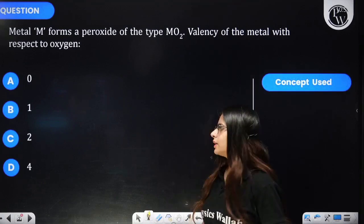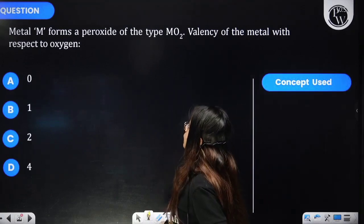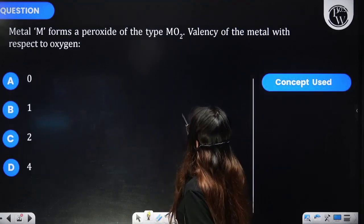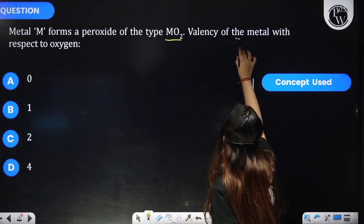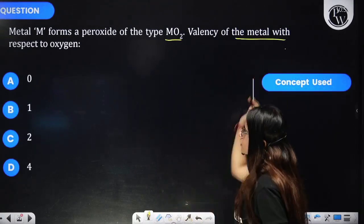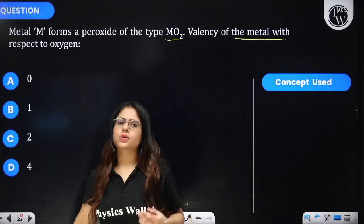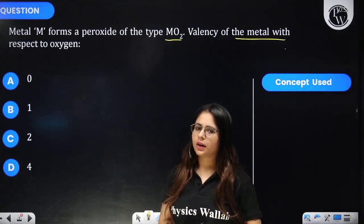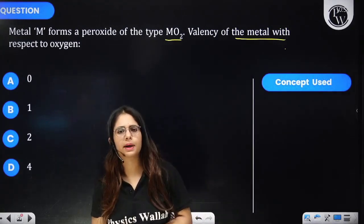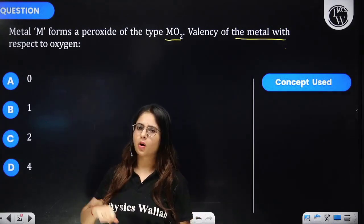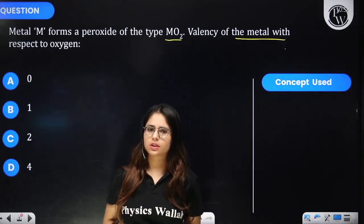Let's see this question. The question says that metal M forms a peroxide of the type MO₂. You need to find the valency of the metal with respect to oxygen. So a metal oxide is given and you have to tell what is the oxidation state of the metal in this metal oxide.